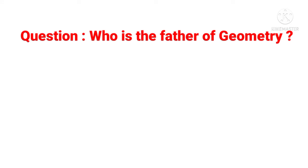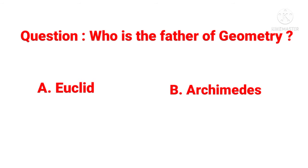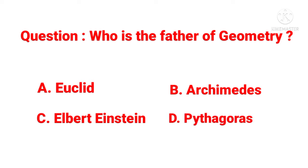Next question: Who is the father of geometry? Option A: Euclid. Option B: Archimedes. Option C: Albert Einstein. Option D: Pythagoras. The answer is Euclid.